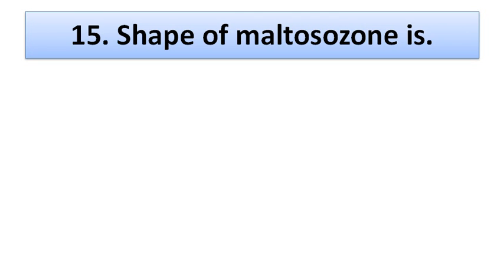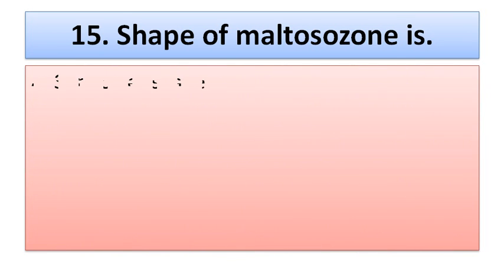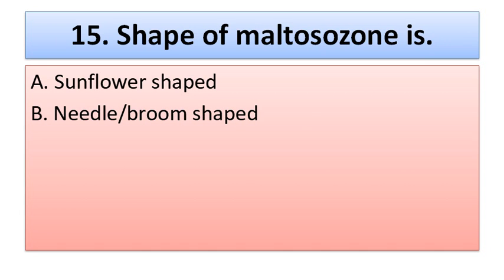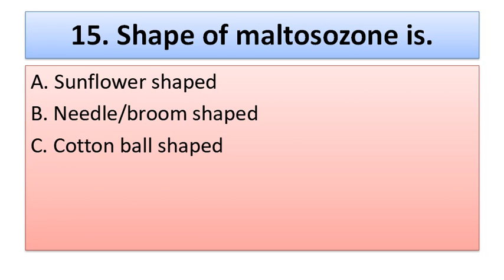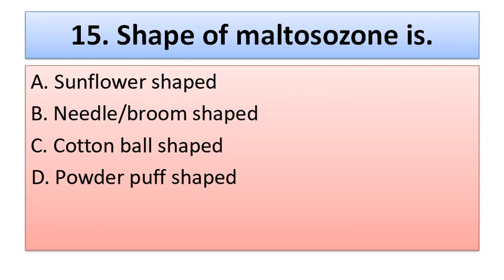Question number fifteen: the shape of maltose osazone is — option A: sunflower shaped, option B: needle broom shaped, option C: cotton ball shaped, option D: powder puff shaped. The correct option is option B — maltose osazone is needle broom shaped.